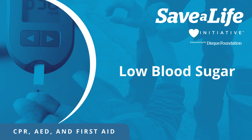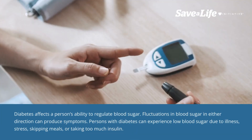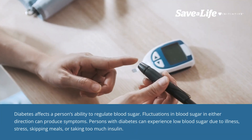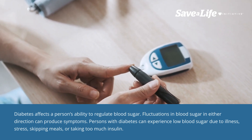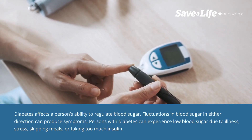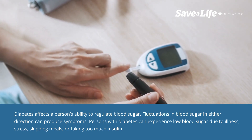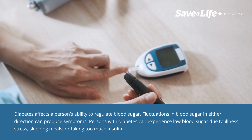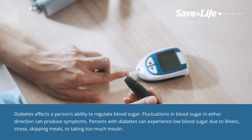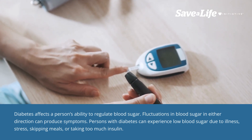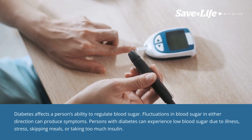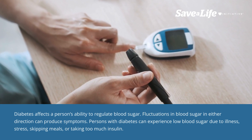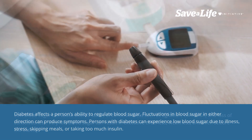Low blood sugar in persons with diabetes. Diabetes affects a person's ability to regulate blood sugar. Fluctuations in blood sugar in either direction can produce symptoms. Persons with diabetes can experience low blood sugar due to illness, stress, skipping meals, or taking too much insulin.